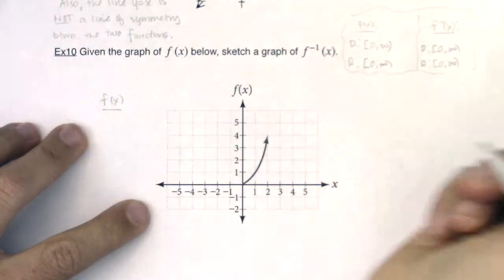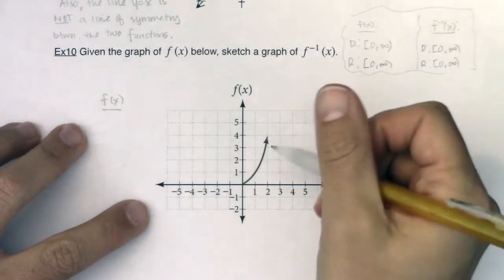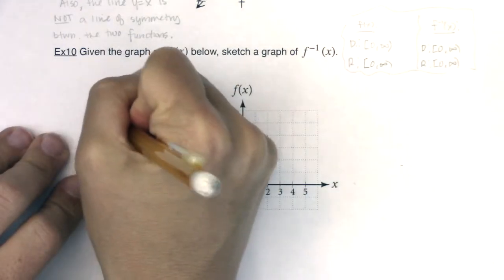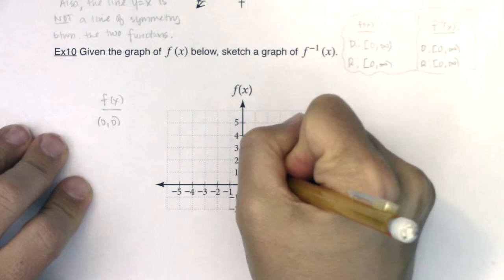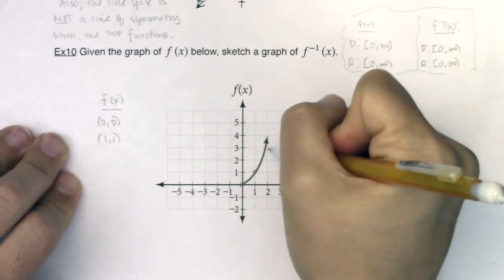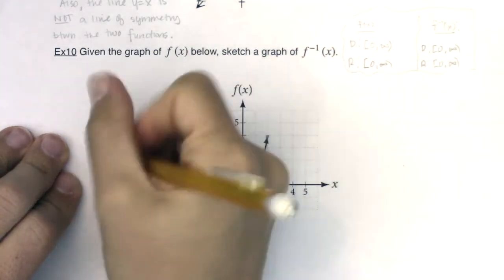Let me find some ordered pairs on this graph, then I'll reflect them by swapping x's and y's. I see (0,0) is a nice ordered pair, (1,1) is another, and (2,4) is a third.